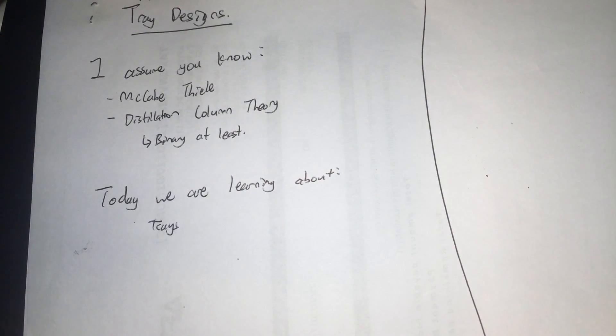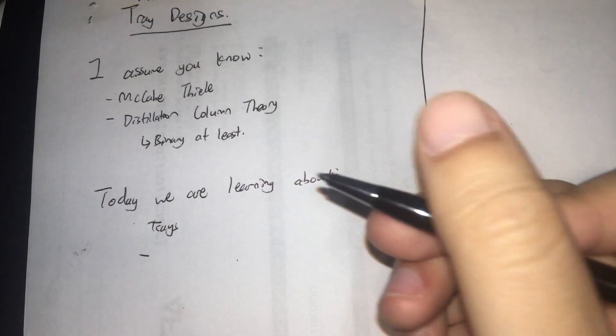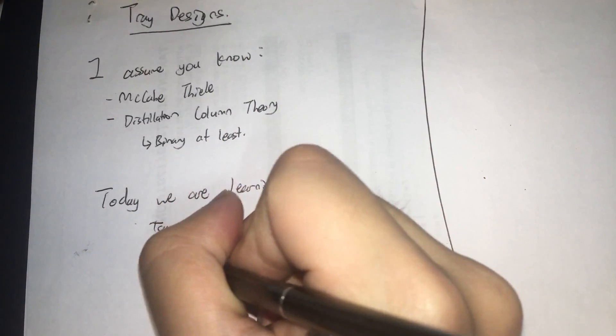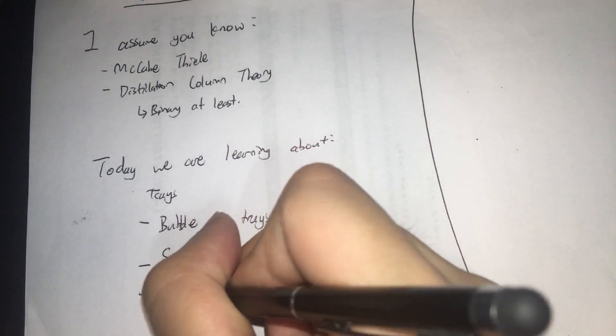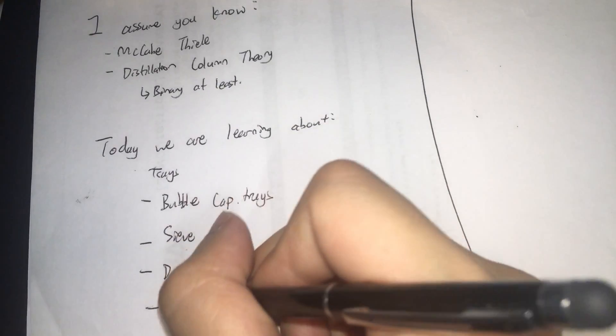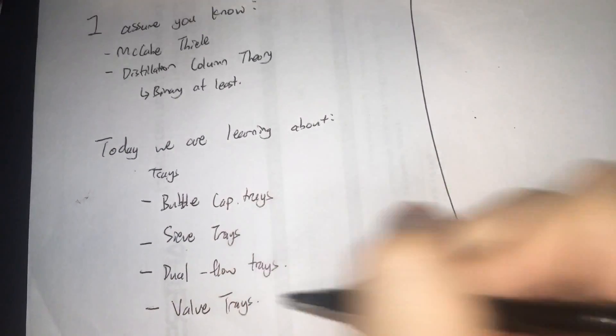Today we will be learning about trays. We want to introduce some of the trays that are found in distillation columns, and how they work. These trays will include bubble cap trays, sieve trays, dual flow trays, and of course some variants involve valve trays. If these names confuse you, don't worry — we'll get to them in a little bit.